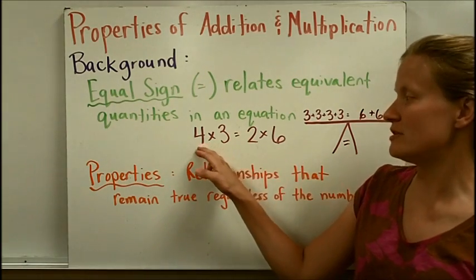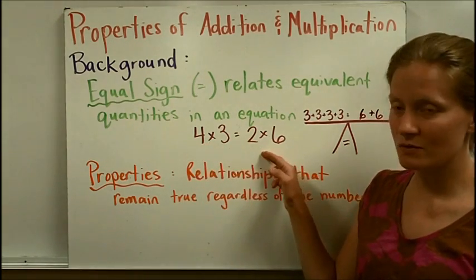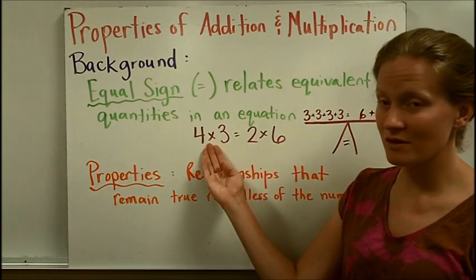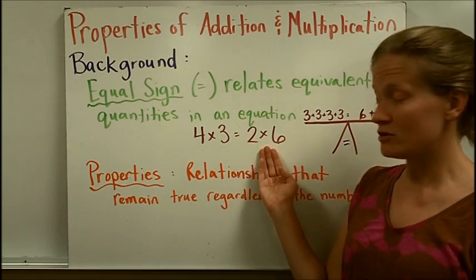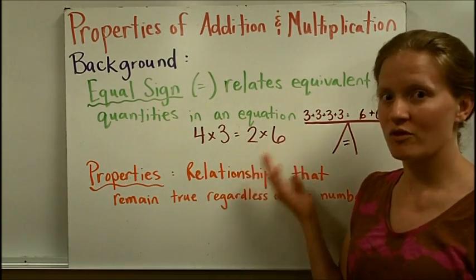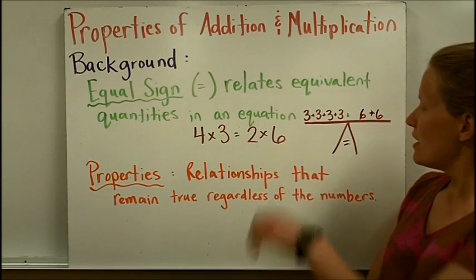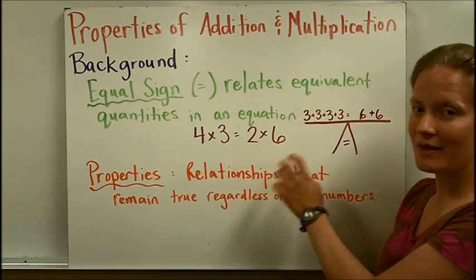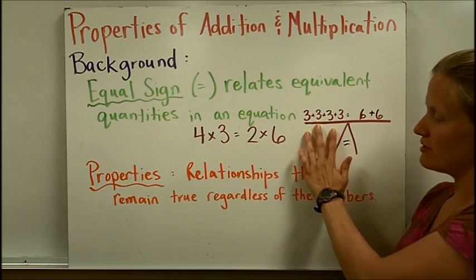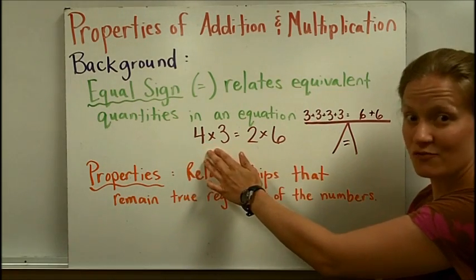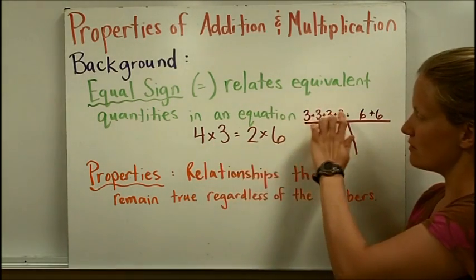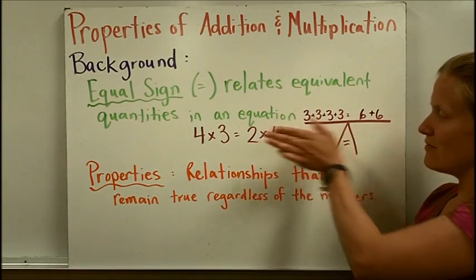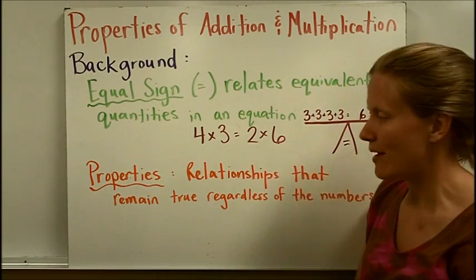In this example, 4 times 3 equals 2 times 6. The equals sign represents that what's on this side is equivalent to what's on this side, or they're worth the same amount. It helps to think about the equal sign like a balance scale. The 4 times 3 means 4 threes, or 2 sixes — this would even out a balance scale because they're worth the same amount.